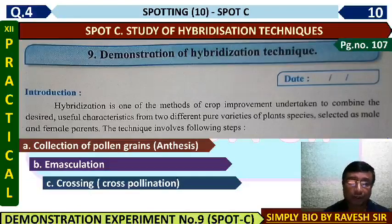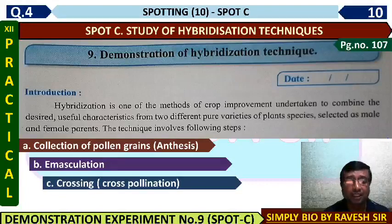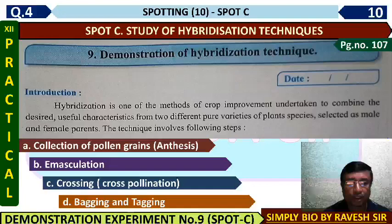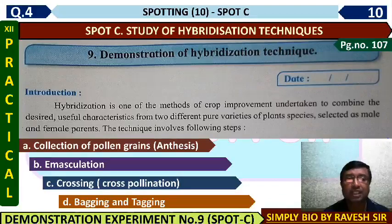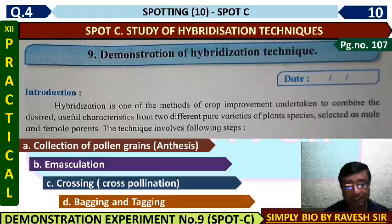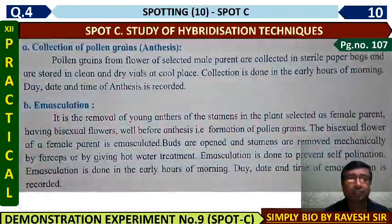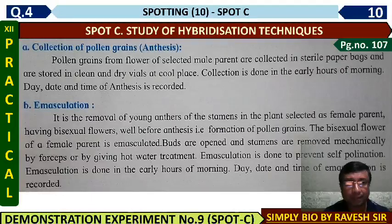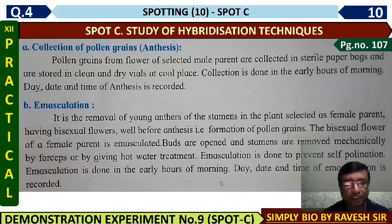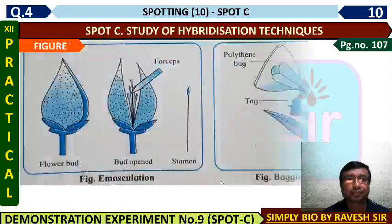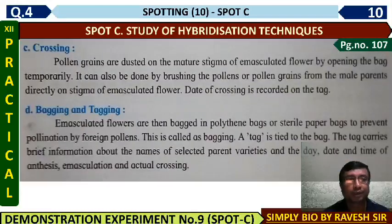Then artificial cross pollination is done — pollen of the male parent is dusted onto the emasculated flower of the female plant. After crossing, the flower is covered and protected inside a bag, and information is added with a label. So the steps are: collection of pollen grains, then emasculation, then crossing, and finally bagging and tagging.